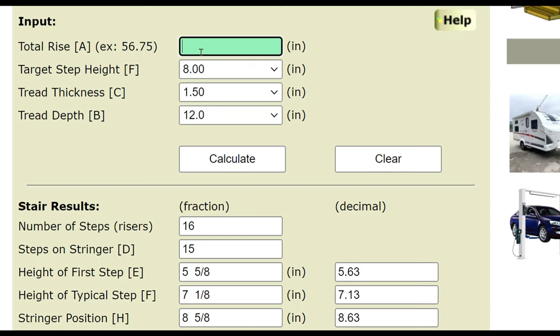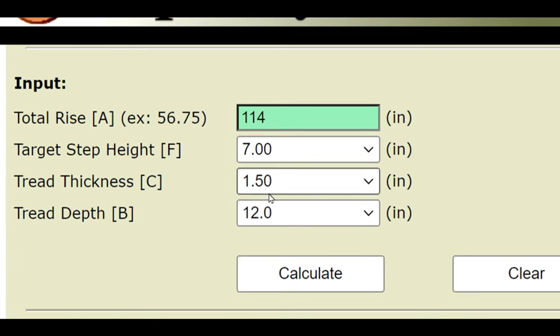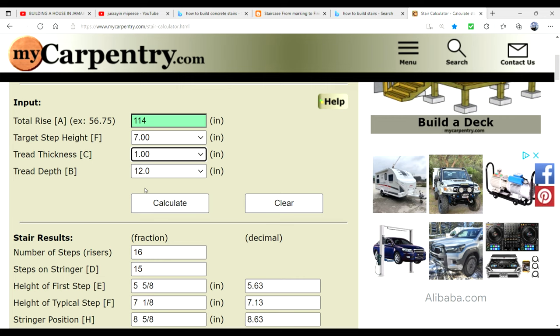Here we have what we are going to call our total rise and our total rise is going to be 114 inches. Target step height is 7 inches and our tread thickness is going to be 1 inch.